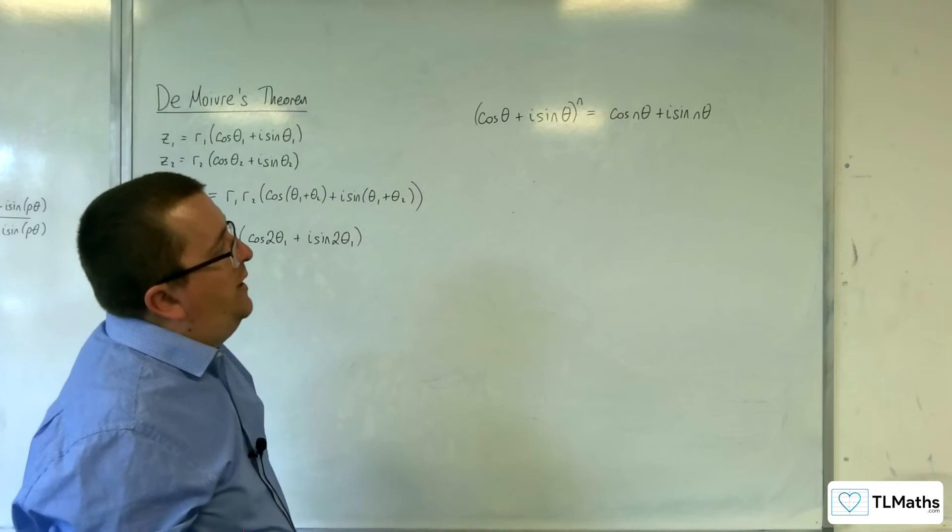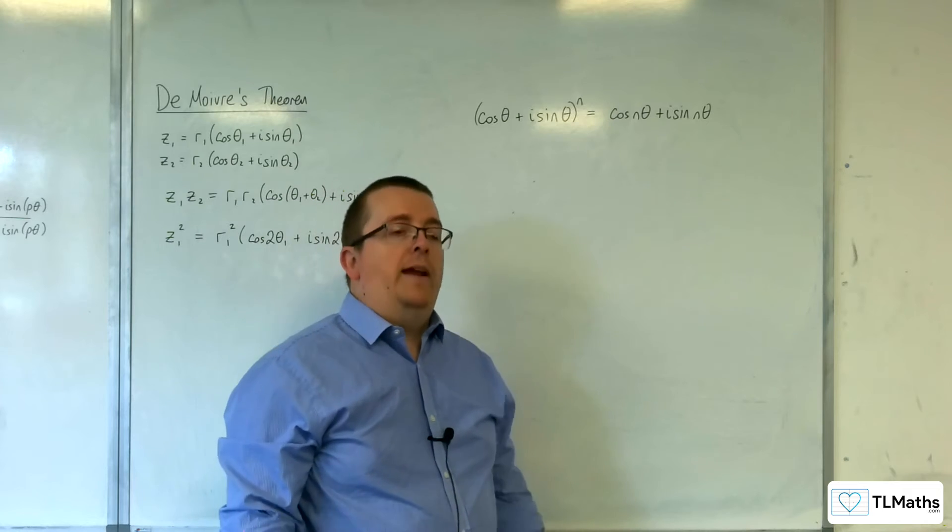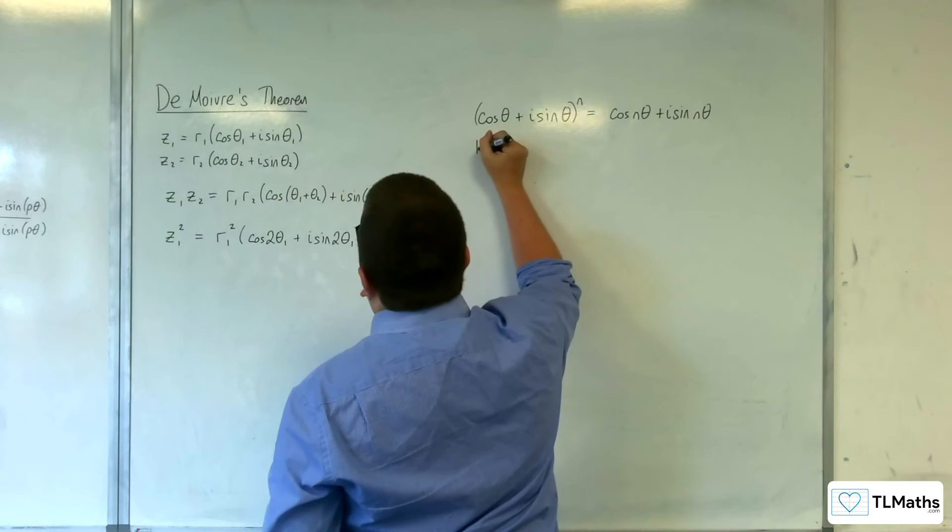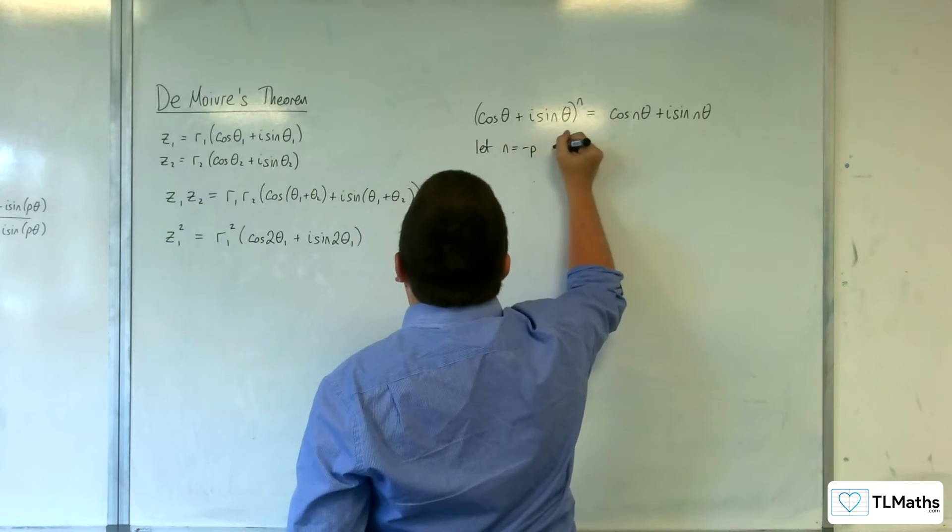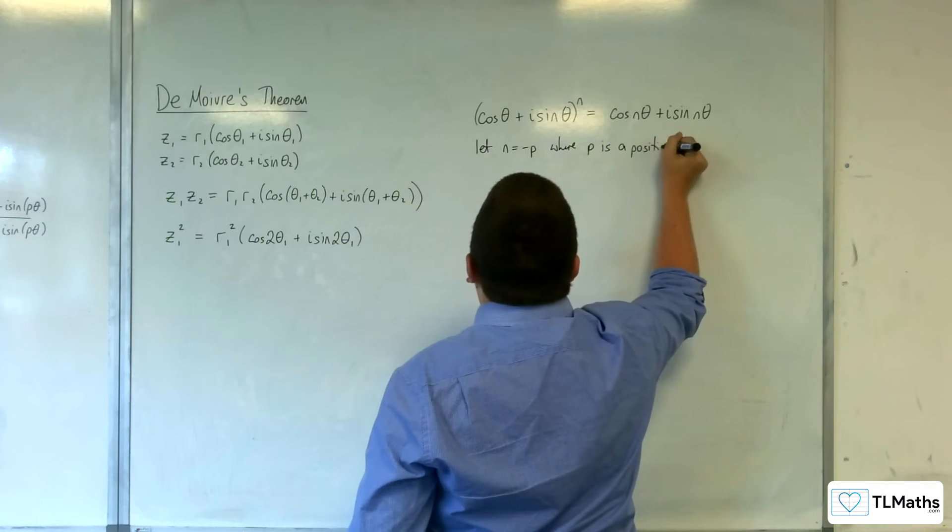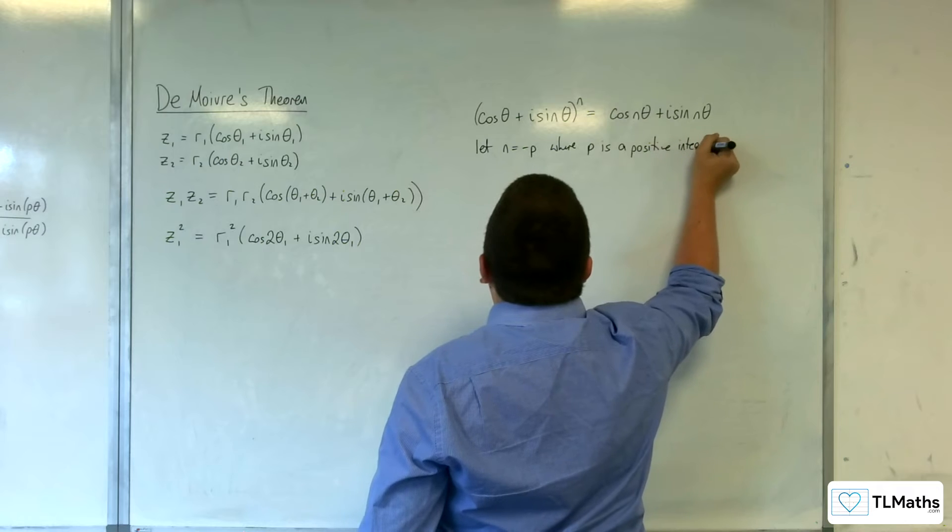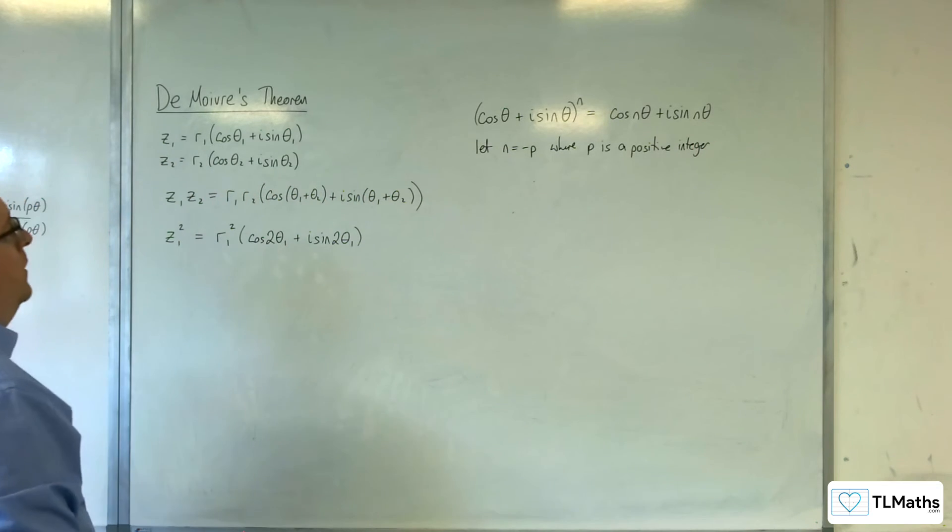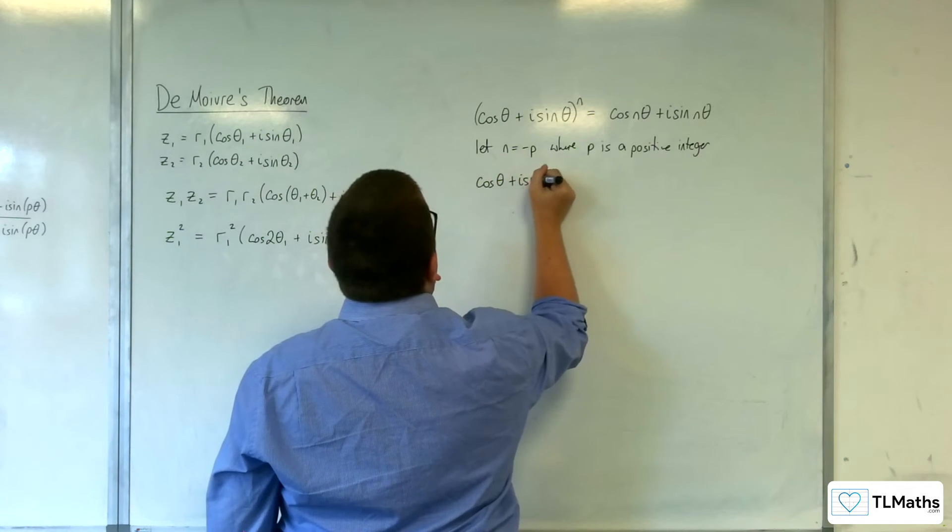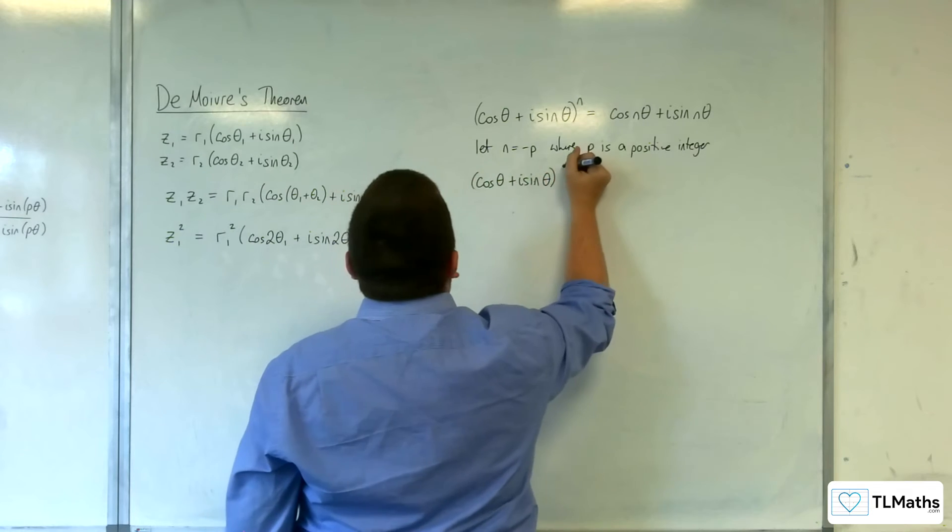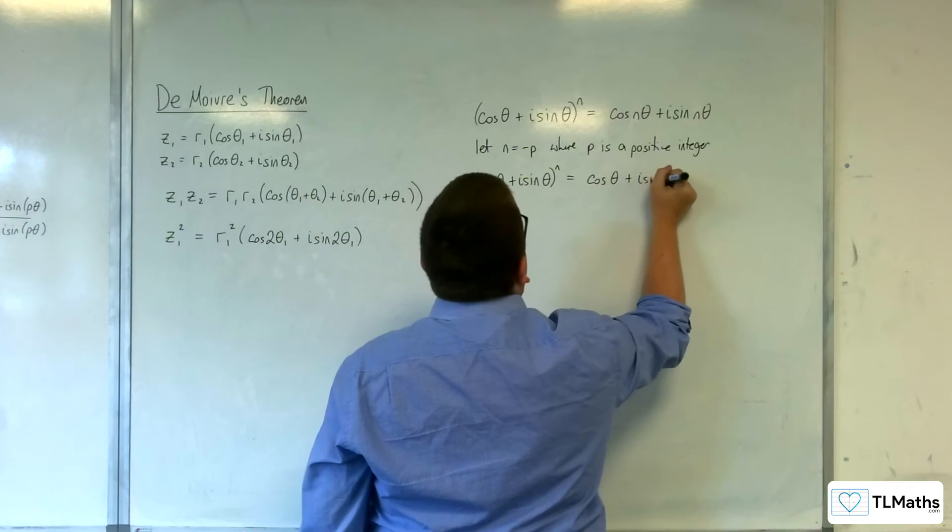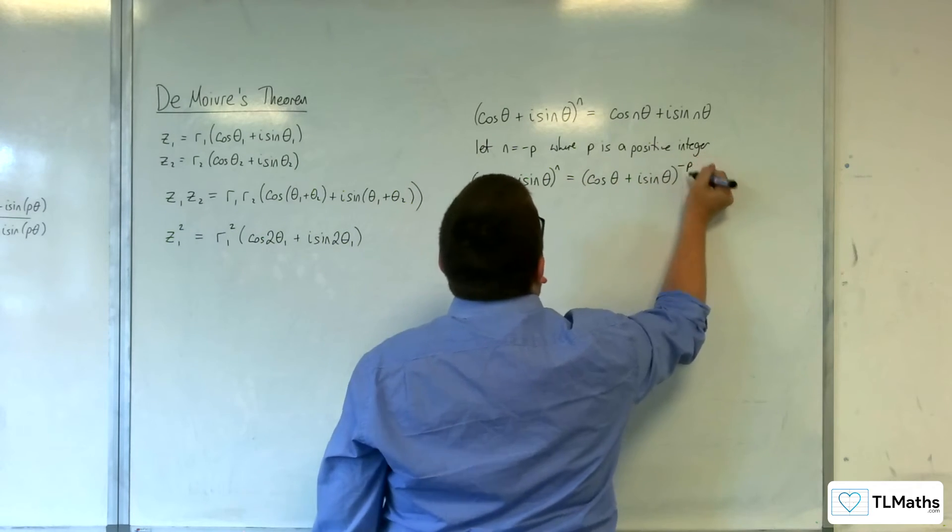So it would be nice if we could also work with negative values of N, and that's what I'm going to prove here. So let's say that let N equal minus P, where P is a positive integer. So that would mean that we would have cosine theta plus i sine theta to the N is now cosine theta plus i sine theta to the minus P.